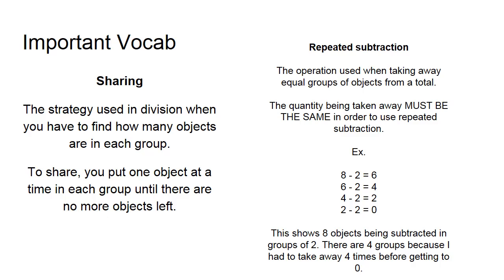Repeated subtraction is the operation we use when taking away equal groups of objects from a total, meaning I have a set number of objects and I'm taking away groups of them at a time. I do this when I want to look for how many groups I have. Similar to repeated addition, the quantity you're taking away has to be the same in order to use repeated subtraction.